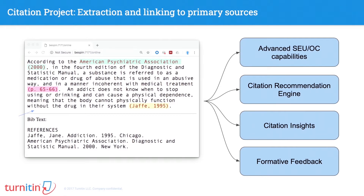Lastly, on the writing side, we have citation extraction going on right now. There's actually not a good existing way to parse out the spots where the writer says a fact is supported by evidence — those are called citations — and then match them to the corresponding reference line. We now have a machine learning engine that can do that, and it enables a lot of other things downstream, including for originality detection and also to help students write better.